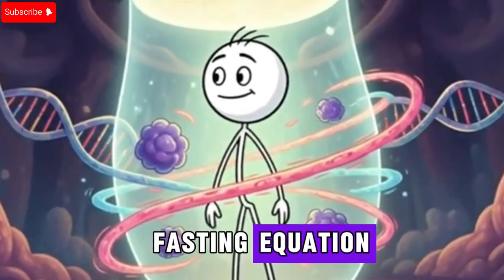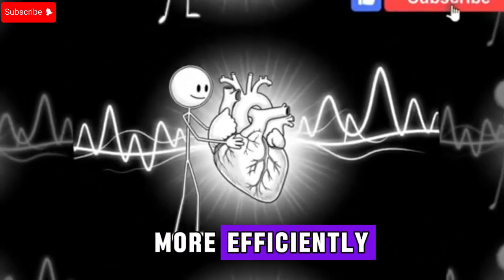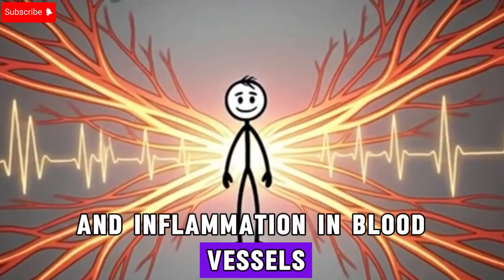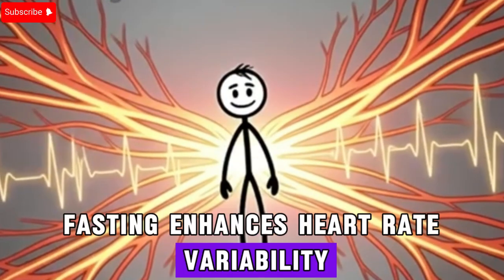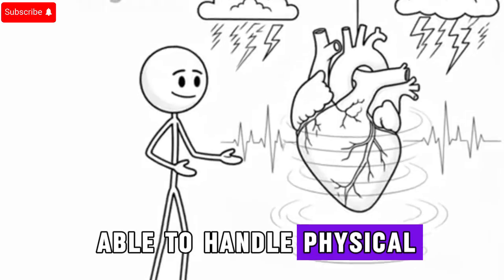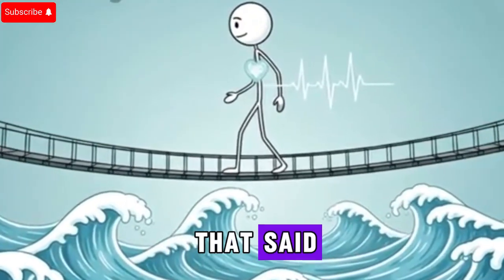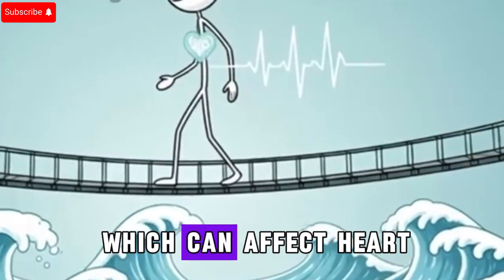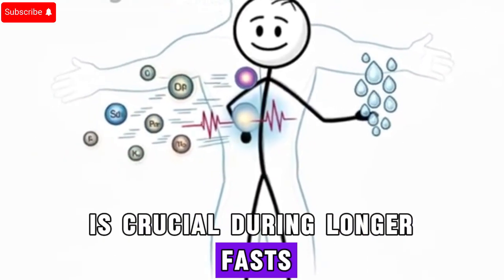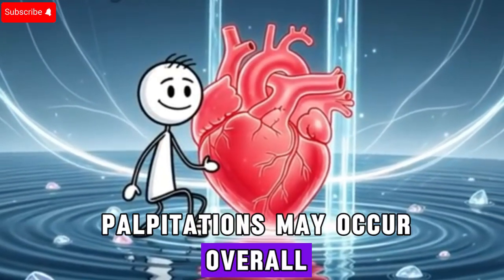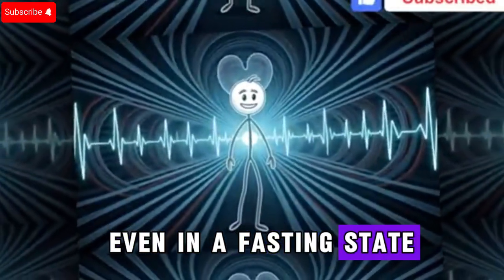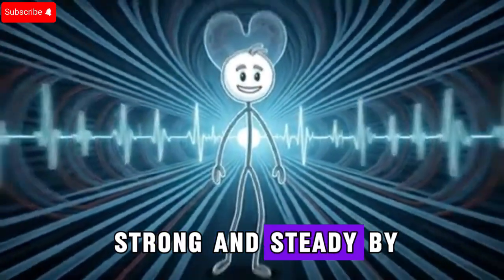Your heart is not left out of the fasting equation. By the 20th hour, it begins to beat more efficiently. Lower insulin and reduced glucose levels can improve cardiovascular function by decreasing blood pressure and inflammation in blood vessels. Some studies suggest fasting enhances heart rate variability, a measure of how adaptable your heart is to stress. A higher variability means your body is more resilient, able to handle physical or emotional challenges with less strain. That said, fasting also temporarily reduces electrolyte levels, which can affect heart rhythm in sensitive individuals. Overall, the heart adapts gracefully, finding new rhythms that balance efficiency and endurance.